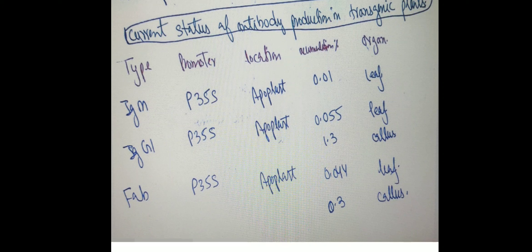CHO cell line production came to only about 7.5 percent per year, which is very low. Plant cell lines have higher accumulation rates and higher production rates than animal cell lines, with much lower cost investment. Additionally, mammalian cell lines are prone to viral infections, and if the cell line is infected, those antibodies cannot be used for therapeutic purposes.